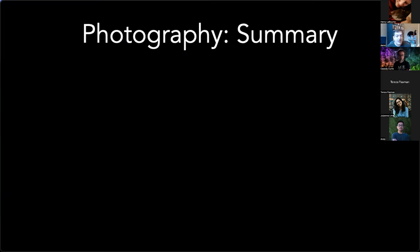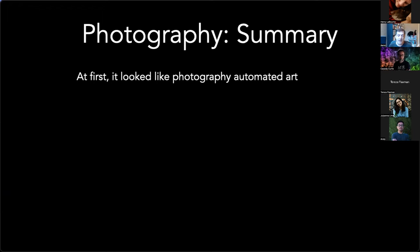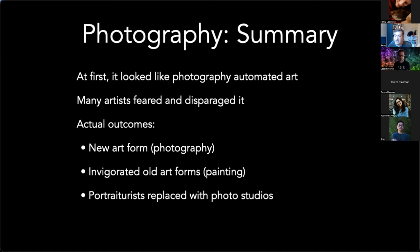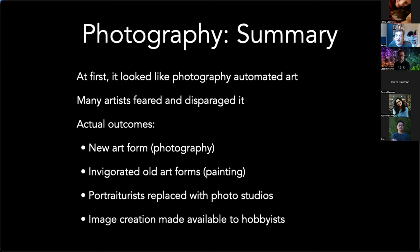To summarize the photography story: it first looked like photography automated art, because it automated some things that artists thought were their identity, and many artists at the time feared and disparaged it. What actually came out of it was this new art form of photography, as well as a rethinking of old art forms — it completely transformed what we think of as being art. Portrait artists and practical image makers were replaced with photo studios. Also, image creation was made available to hobbyists — people who are not professionals. Now we pretty much all carry phones in our pockets and can take pictures whenever we want.